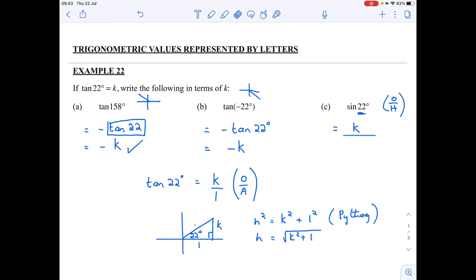Let's go and fill this in here quickly. We've worked it out. My hypotenuse was k squared plus 1 square rooted. So this is all going to be over k squared plus 1. So now I've written sin 22 in terms of k. There we go.